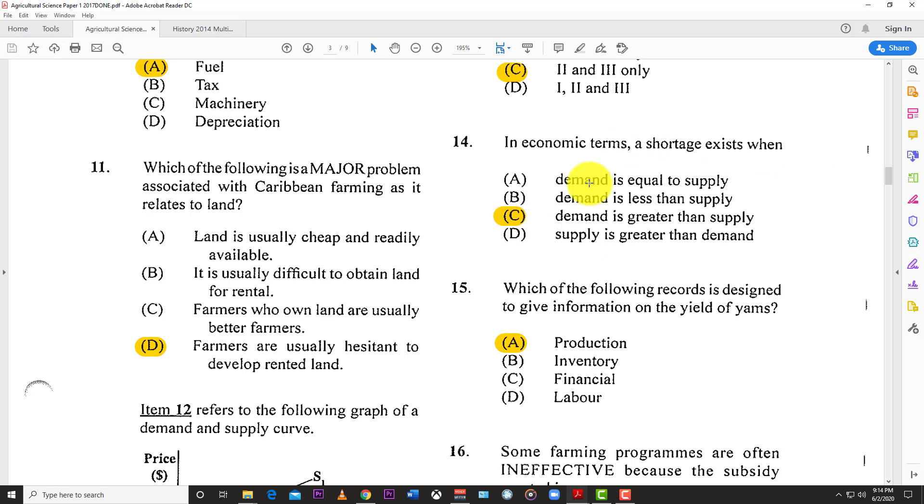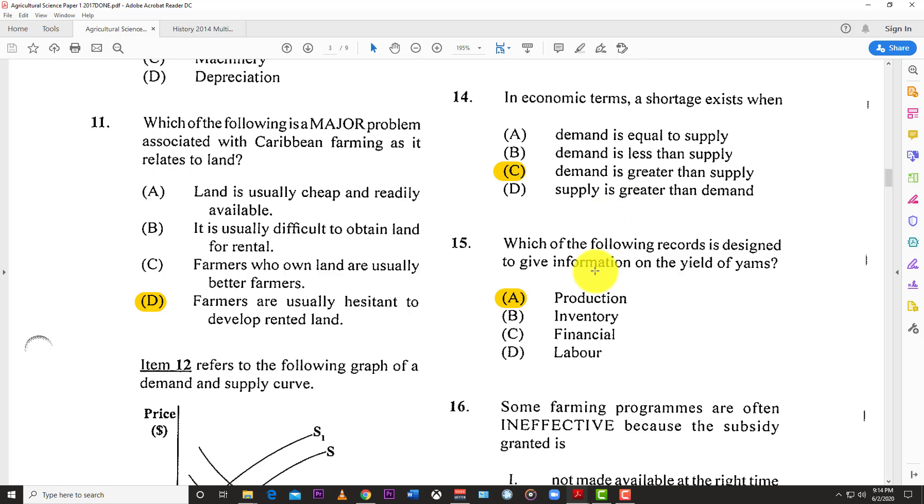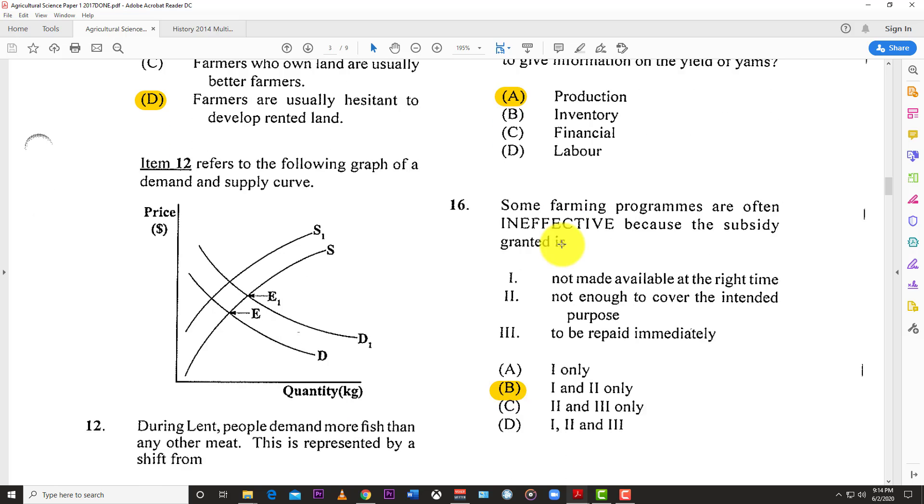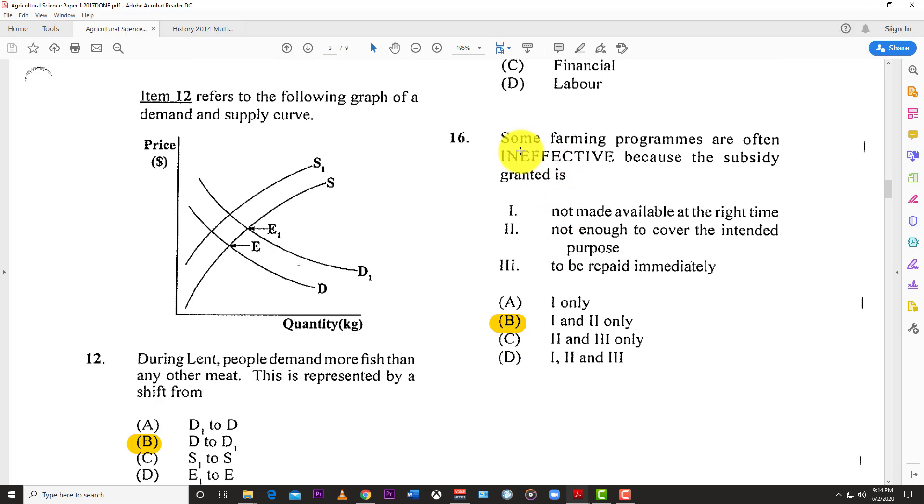Number fourteen: In economic terms, a shortage exists when demand is greater than supply. Number fifteen: Which of the following records is designed to give information on the yield of yams? Production records.